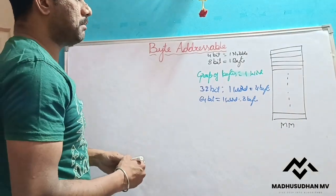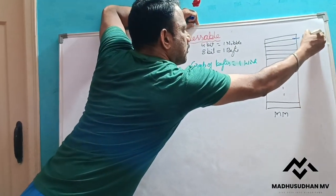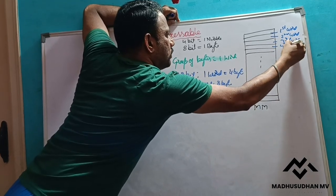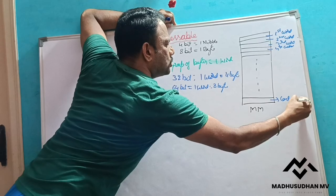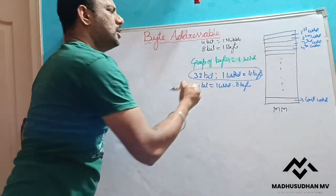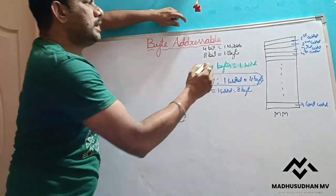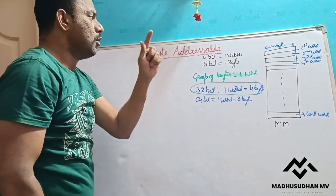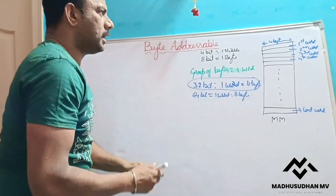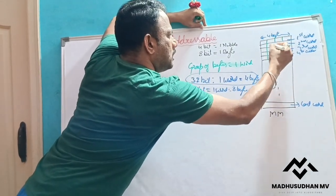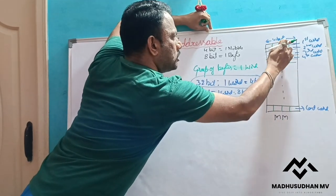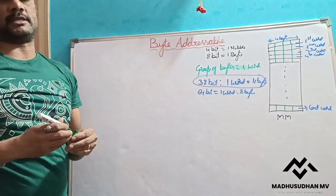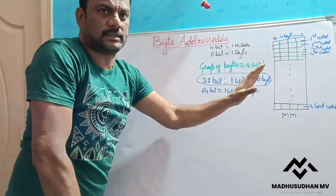In main memory, we store the first word, the second word, the third word, and so on up to the last word. Assuming a 32-bit machine, the size of one word is 4 bytes. So each word occupies 4 locations in memory, since one byte gets one address. Each word therefore consists of 4 bytes, giving us 4 byte-level locations per word.